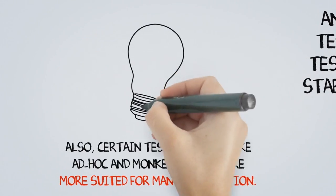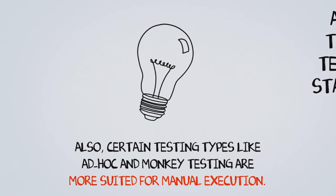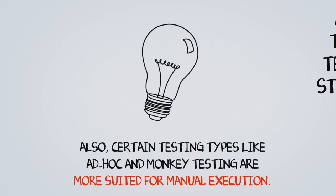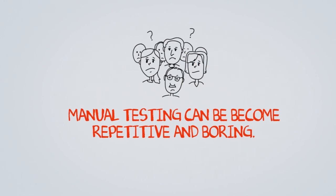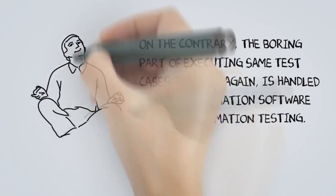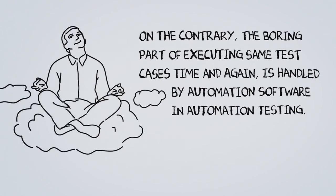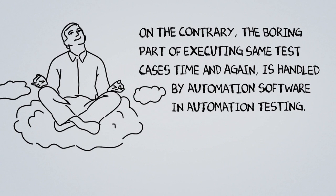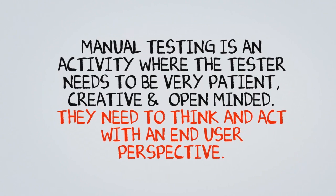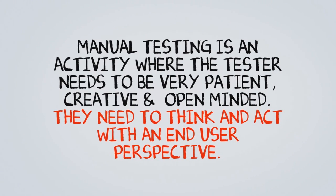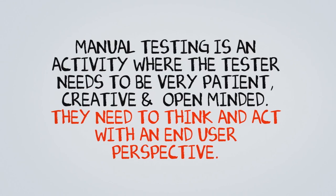Certain testing types like ad hoc and monkey testing are more suited for manual execution. Manual testing can become repetitive and boring. On the contrary, the boring part of executing the same test cases time and again is handled by automation software in automation testing. In conclusion, manual testing is an activity where the tester needs to be very patient, creative, and open-minded, and they need to think and act with an end-user perspective.